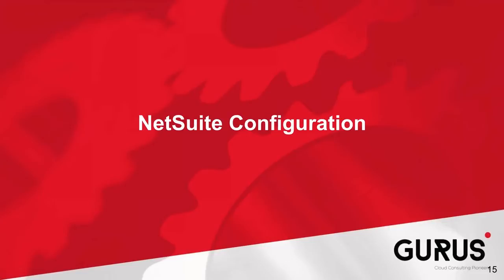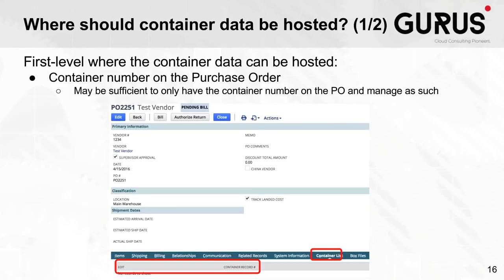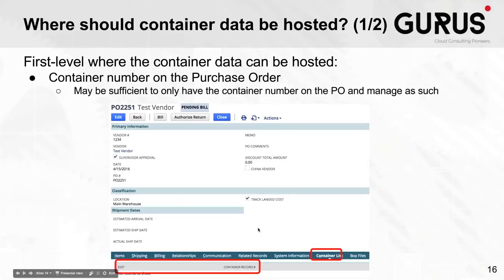Before the live demo, let's consider NetSuite configuration options. For some clients, a simple approach is to add custom fields directly on the purchase order — a custom tab or body field to indicate which container a PO belongs to. A saved search can then show all containers with their associated POs. This simpler approach, with the PO status added, may be sufficient for many clients.